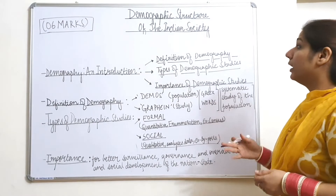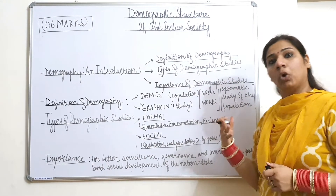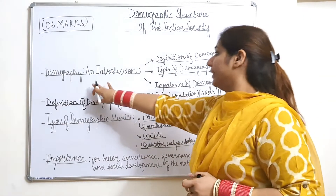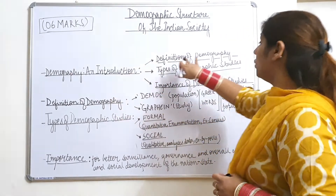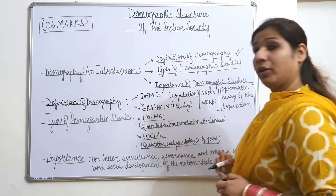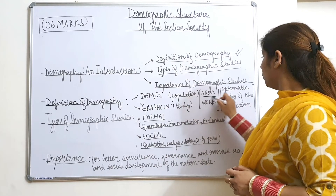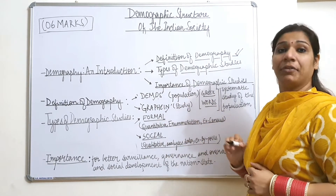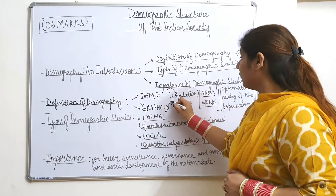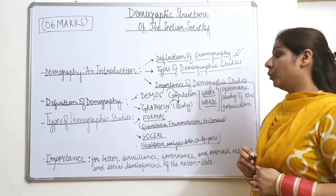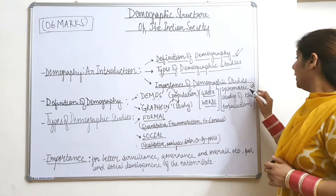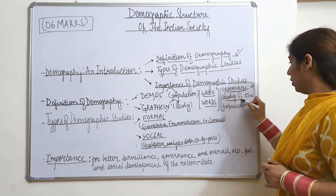Now moving ahead, I will discuss each heading in more detail. The first heading is 'Demography and Introduction.' The definition of demography comes from two Greek words: 'demos' and 'graphene.' 'Demos' literally means population and 'graphene' literally means study, so demography is the systematic study of the population.